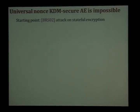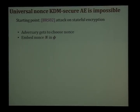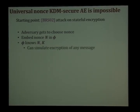Now let's look at the first attack. Recall that what we're saying is: if the authenticated encryption scheme does not get random nonces but gets nonces from some arbitrary non-repeating source, then it's not possible to have KDM security. The starting point of our attack is an earlier attack by Black, Roggewe, and Shrimpton on stateful encryption schemes. In the universal nonce setting, the adversary gets to provide the nonces. One strategy of the adversary is to embed the nonce in the message-deriving function phi. Since phi is evaluated by the challenger on the key, phi knows both the nonce and the key — in other words, phi can simulate the encryption of random messages.